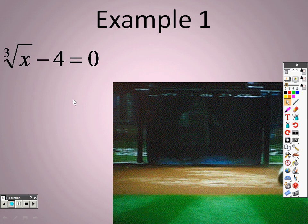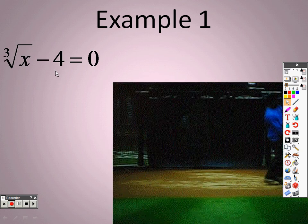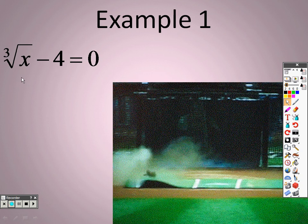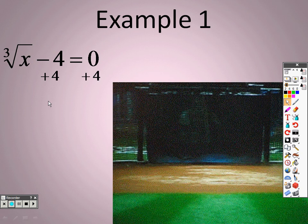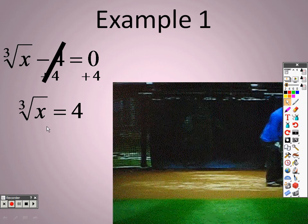Example one. To solve this equation for x, let's start here very simply. We have to get x by itself. So the first way that we can possibly get x by itself is by adding 4 to both sides. So let's add 4 to both sides. So when I do that, I get the cube root of x equals 4.